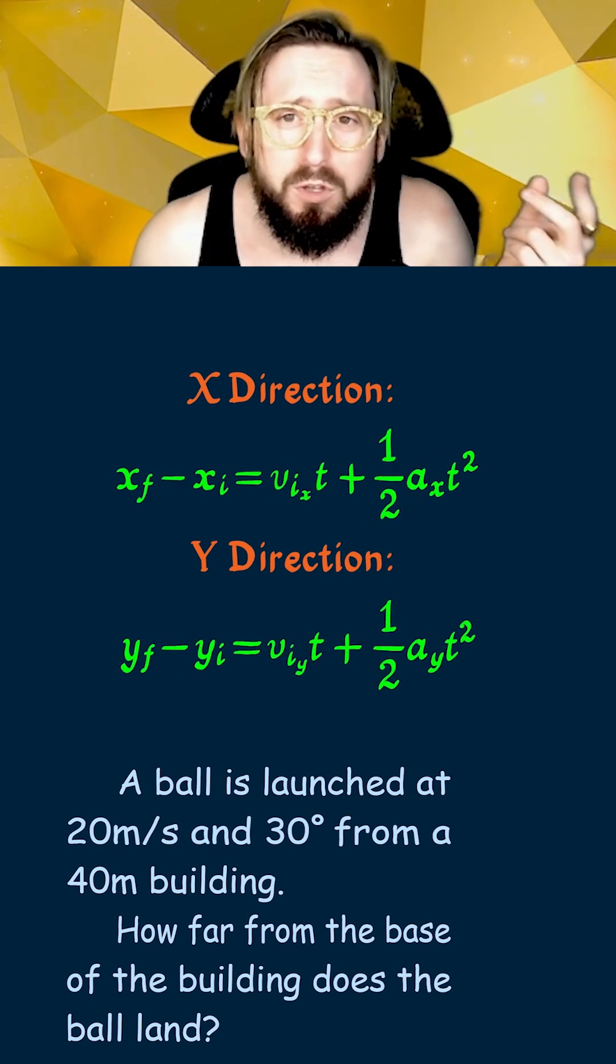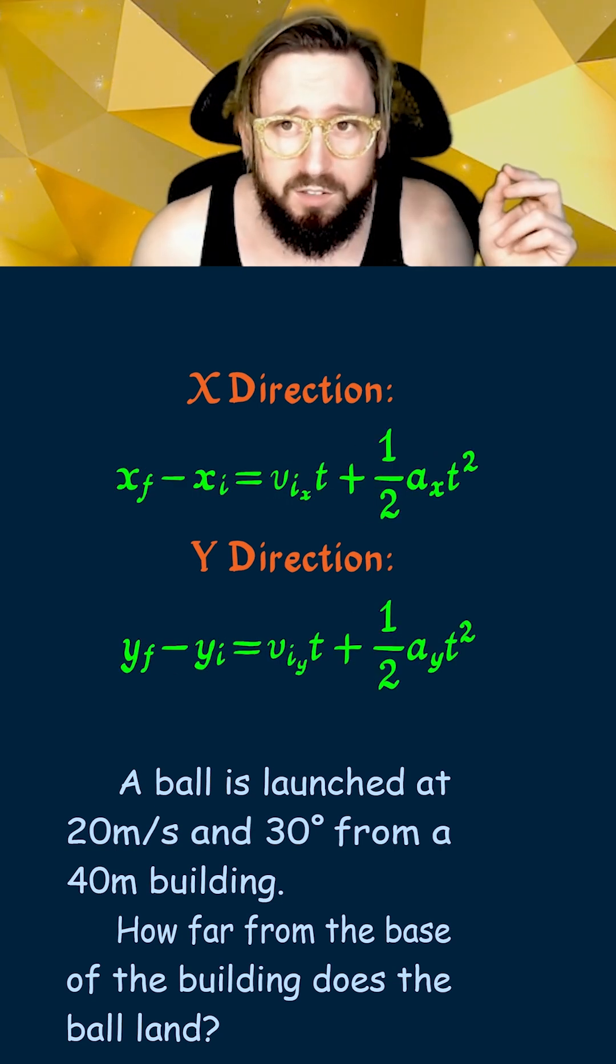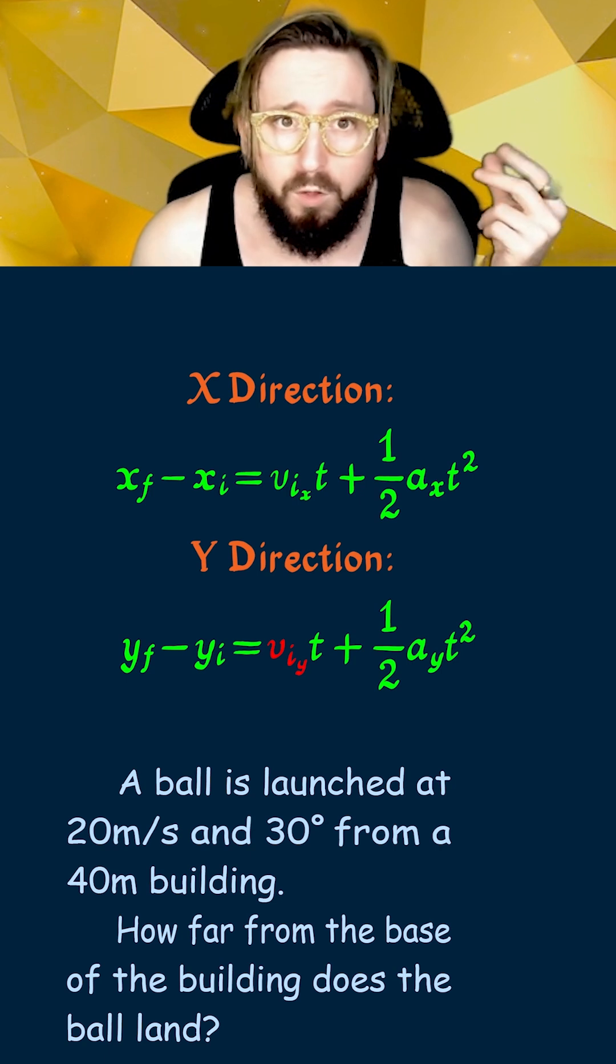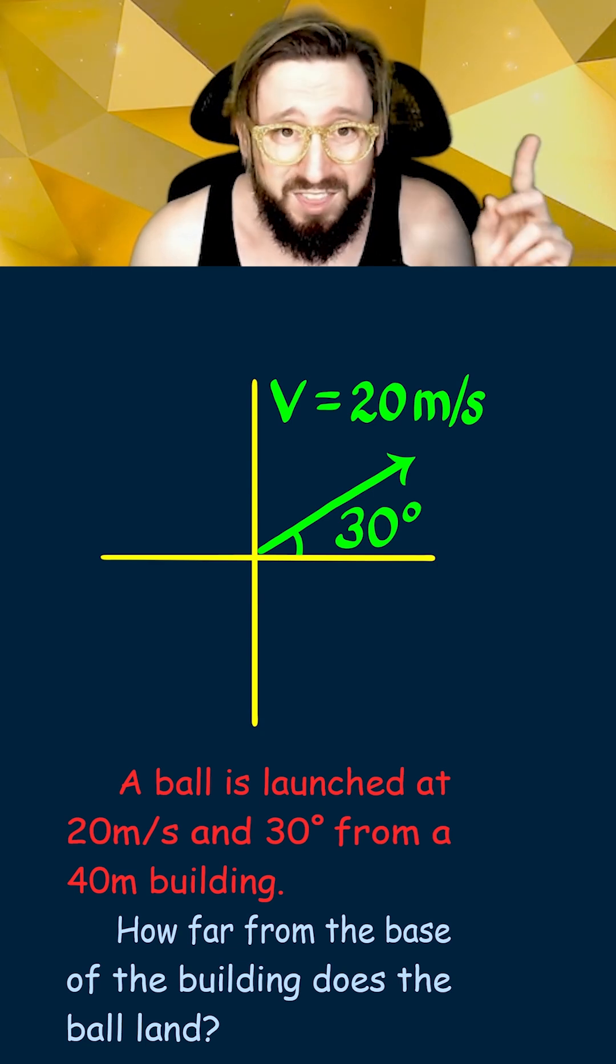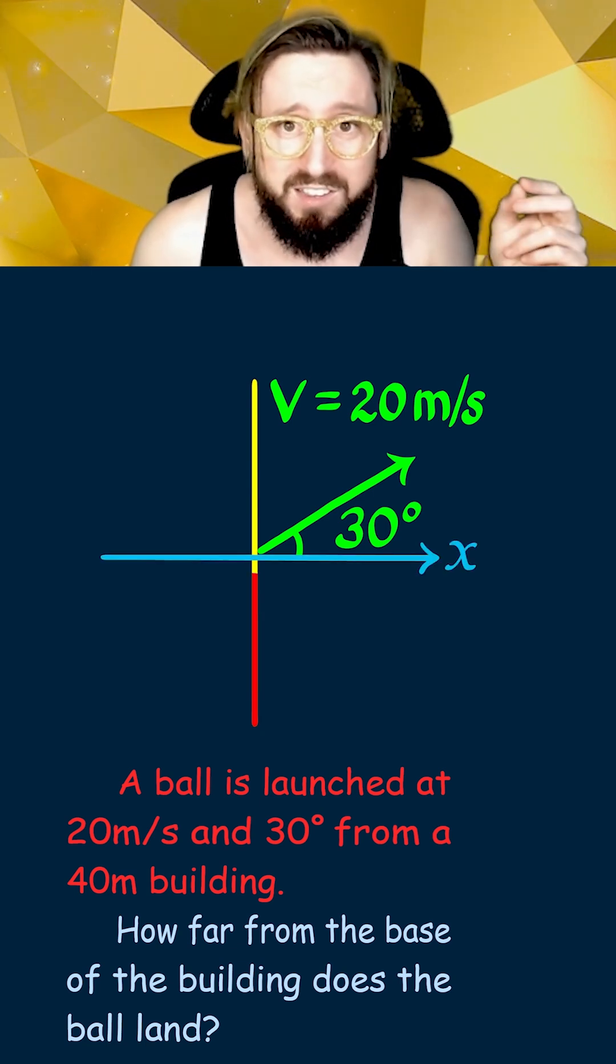Now when writing these out, you'll notice that there are two initial velocities, one for the x direction and one for the y direction. However in this question, we are given only one value for the initial velocity, 20 meters per second. But this is a velocity that points in both the x and y direction.